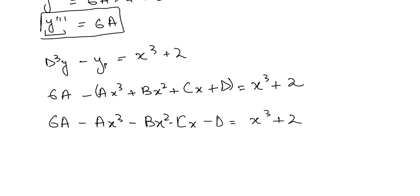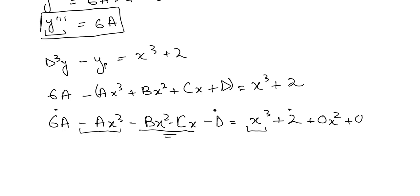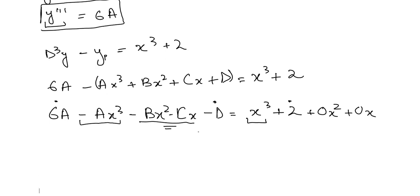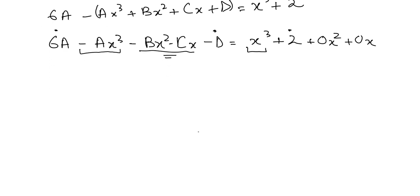Comparing terms: for x³ we have −Ax³ on the left and x³ on the right. For the constant we have 6A − D compared to 2. For the x² and x terms, there are no matching terms on the right-hand side, so we can write 0·x² and 0·x, meaning B = 0 and C = 0.